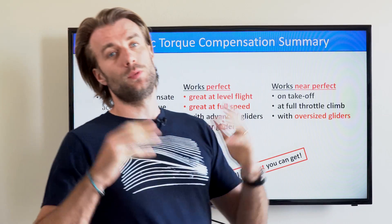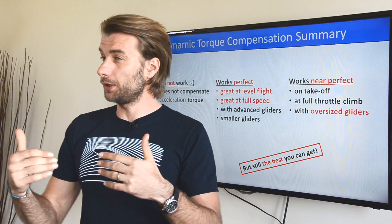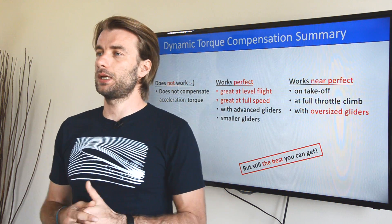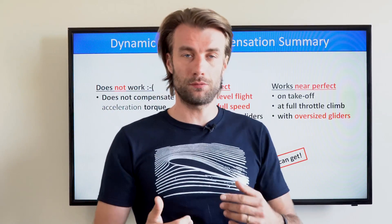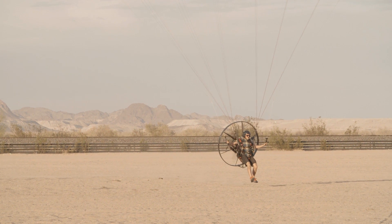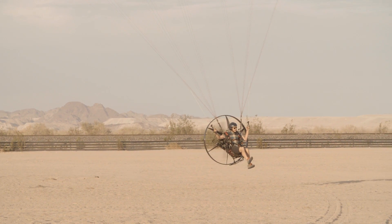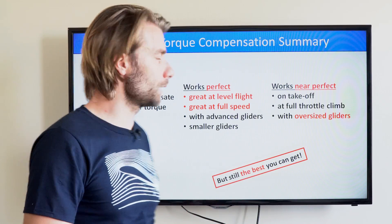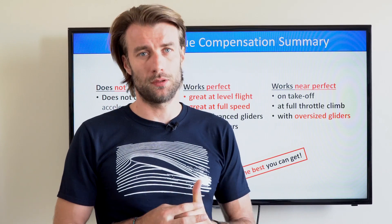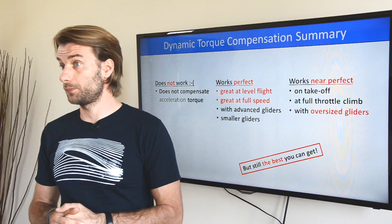There are situations where it works only near perfect. On the ground with zero or very low airspeed, the prop has a higher effective angle of attack, meaning higher drag and higher torque. So on the ground you have more torque than in the air and less airflow than in flight — this is why dynamic torque compensation works only near perfect on takeoff. It also works near perfect at full throttle climb, with probably just a little torque left uncompensated. It doesn't work perfectly with oversized gliders, which I don't believe is a problem at all.